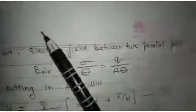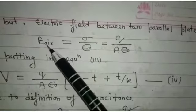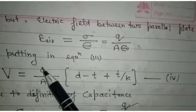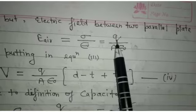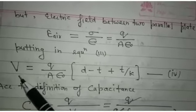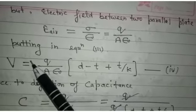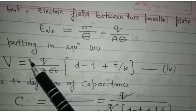But electric field between two parallel plates E_air is equal to sigma upon epsilon naught. Sigma is equal to surface charge density is equal to q upon A. Putting the value of E for a given equation, equation third.